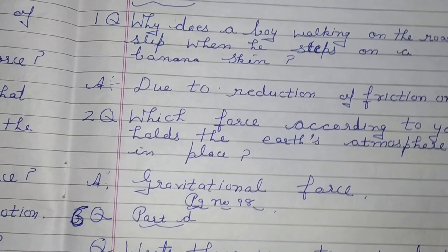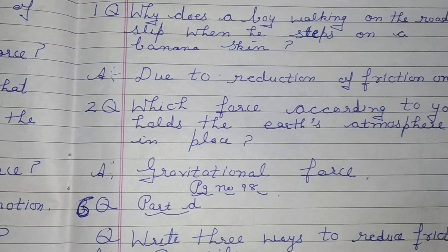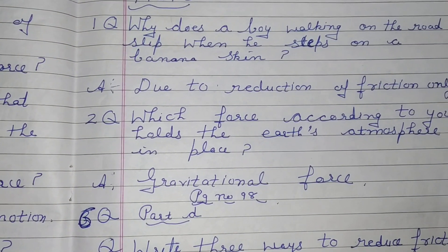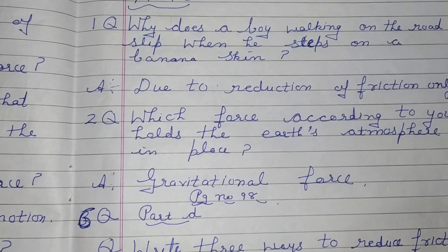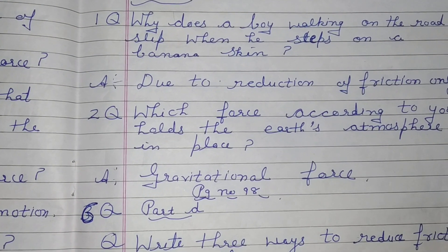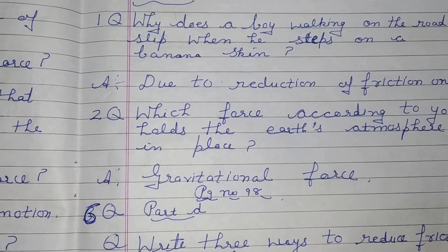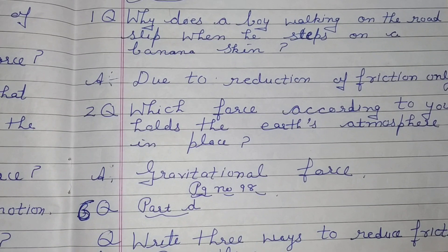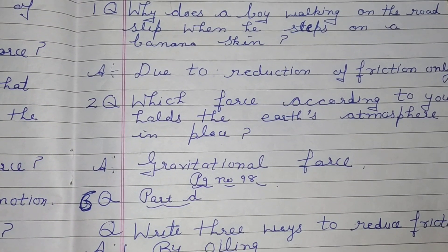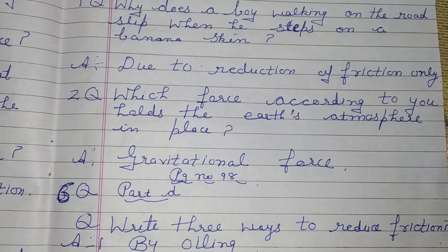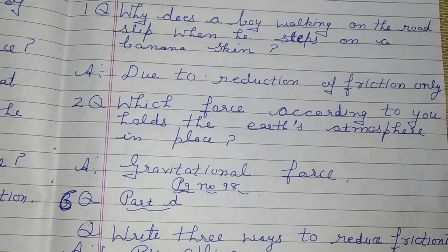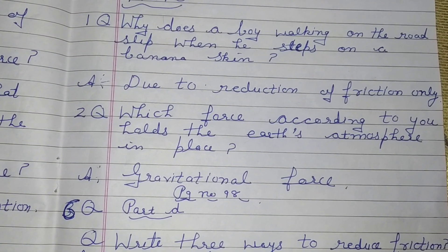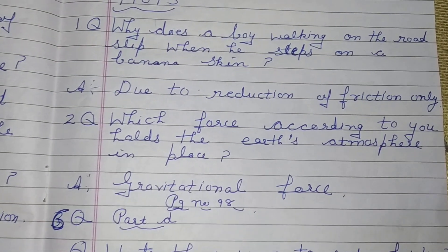HOTS. Number 1 — Why does a boy walking on the road slip when he steps on a banana skin? Answer: Due to reduction of friction.